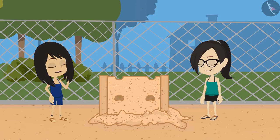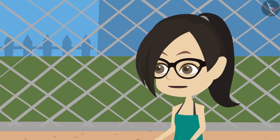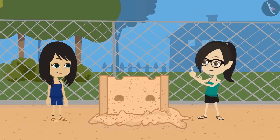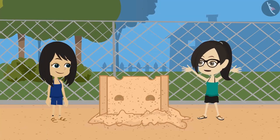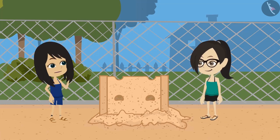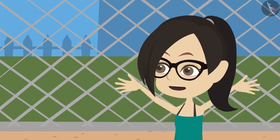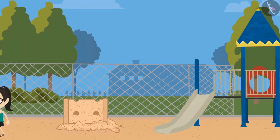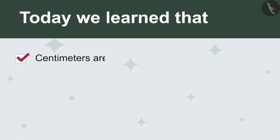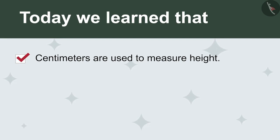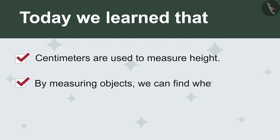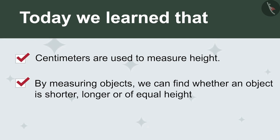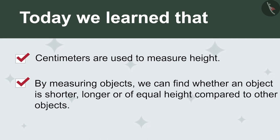'Does this mean that the measurement of centimeters is the same on every scale?' 'Yes, but with such a small scale, we can only measure objects up to 15 centimeters in length. If we want to measure objects longer than 15 centimeters, then how do we do it?' 'I believe there are longer scales available.' 'Yes, but where will we get longer scales from?' 'Why don't we ask Papa tomorrow? Maybe he knows.' Today we learned that centimeters are used to measure height. By measuring objects, we can find whether an object is shorter, longer, or of equal height compared to other objects.